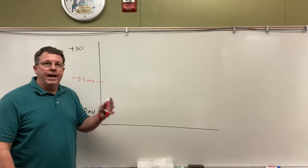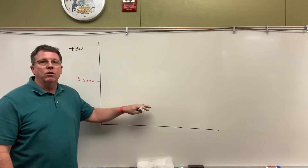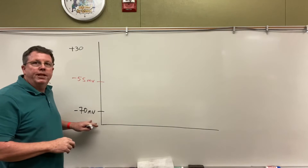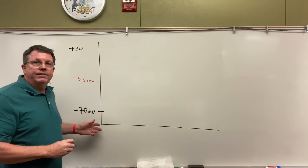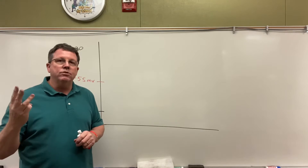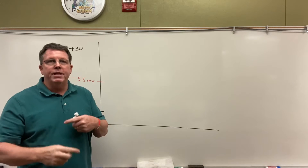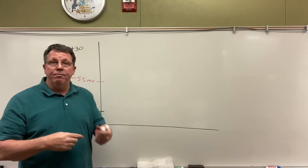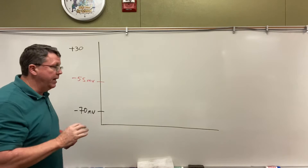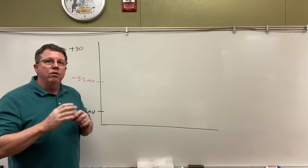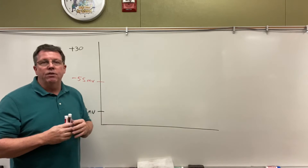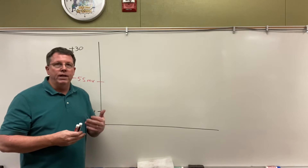We're going to be talking about what occurs in an action potential as far as the charges on the inside of the nerve. If we recall, we said that we had our resting potential, which was about negative 70. At negative 70, two potassium ions are leaving the cell, three sodium ions are coming into the cell, and then the sodium-potassium pump keeps pumping them out and back in.